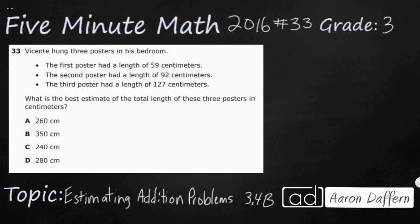So Vincent has three posters in his bedroom, and we have three different lengths: 59 centimeters, 92 centimeters, and 127 centimeters. What is the best estimate, we'll talk about that in just a moment, of the total length of these three posters? So total length, that lets you know we're going to add, and it said these three posters, so we need all three numbers.